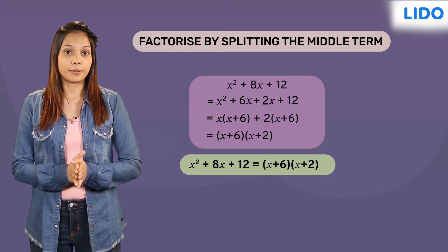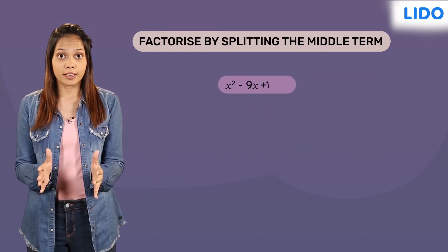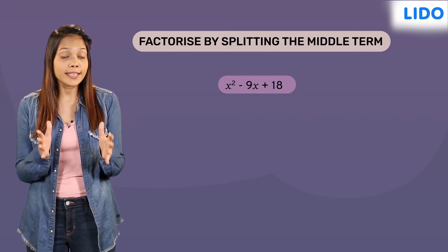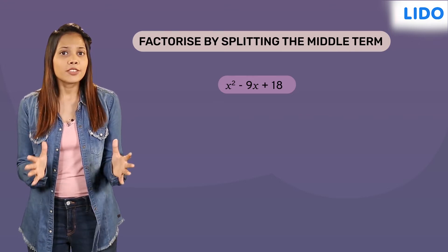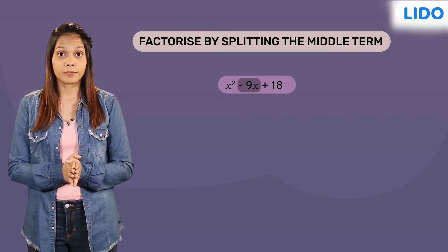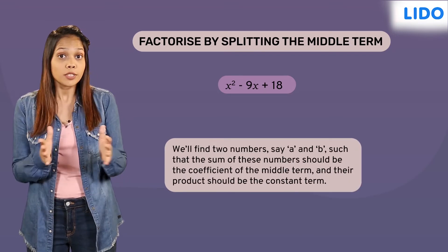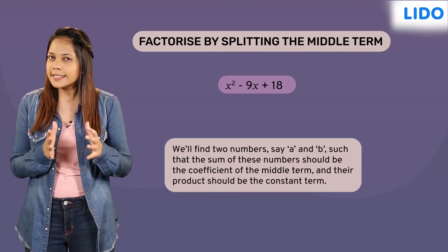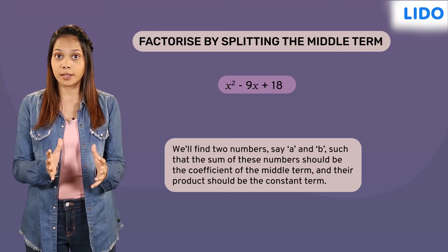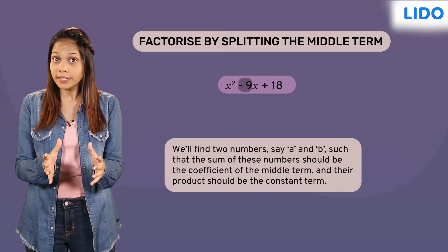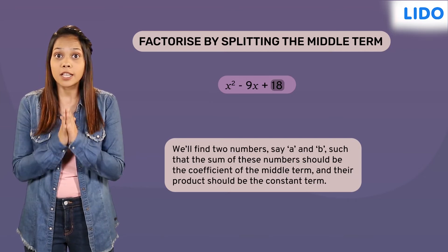Let's take another example. This expression cannot be factorised using identities. Let's try to factorise by splitting the middle term. Recall that the middle term needs to be split into two terms a and b such that the sum of these numbers is the coefficient of the middle term and their product is the constant term.